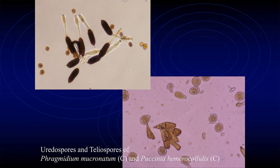Rose rust is another really pretty spore - that's the rose rust spore and that's the daylily rust spore. Rusts have complicated life cycles and more than one type of spore depending on what stage of their life cycle they're in - they can have up to five different spores, and you'll often see two of them together at the same time. That's the repeating stage spore, and these big ones are the overwintering teliospore where they're going to wait until winter.